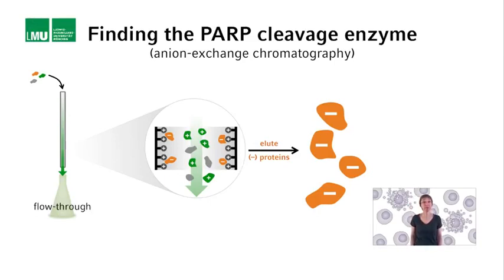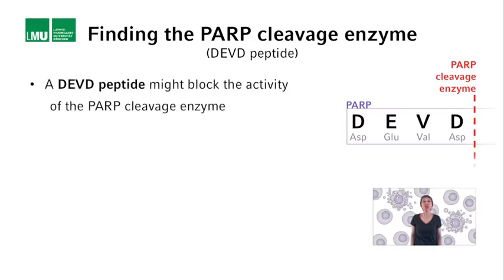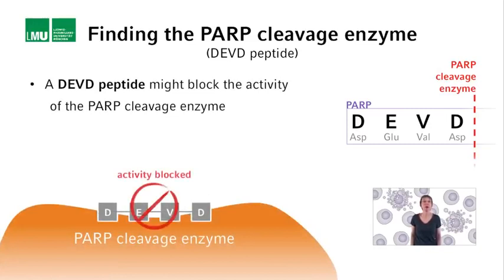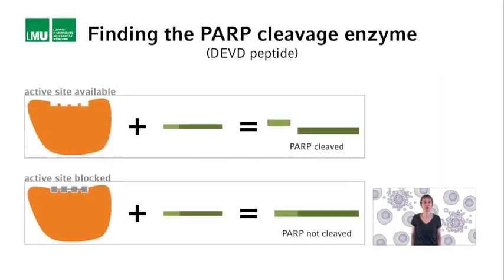As a next step, they did something really clever. Remember that the amino acid sequence around the PARP cleavage site is DEVD — aspartic acid, glutamic acid, valine, and aspartic acid. They thought that a DEVD peptide, when added to the cell lysate, might block the ability of the PARP cleavage enzyme to cleave PARP. They tested it in their in vitro assay and found that yes, the DEVD peptide could block the cleavage. Based on this, they reasoned that this peptide most likely blocked PARP cleavage because it bound to the PARP cleavage enzyme, thereby preventing its ability to bind and cleave PARP.